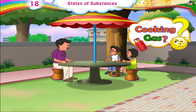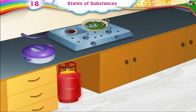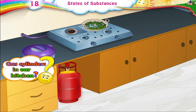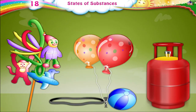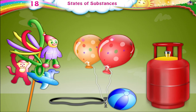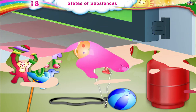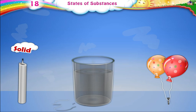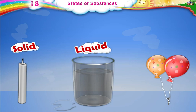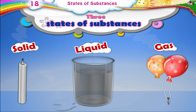Cooking gas? Yes. Have you seen the gas cylinders in our kitchen? They contain cooking gas that we connect to our cooking ranges and use to cook our food. Gases do not have a definite shape, and they take the shape of their container. They cannot be placed in a heap. Solid, liquid, and gas are the three states of substances.